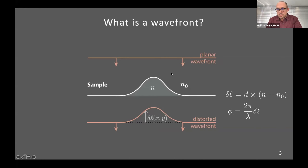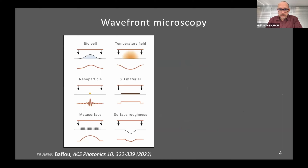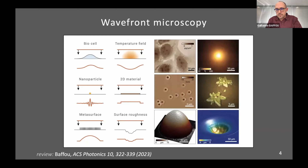The objects we used are many different things: a living cell gives this kind of wavefront distortion, but you can also have a wavefront distortion if you have a microscale temperature gradient, a nanoparticle, a 2D material, a metasurface, or any roughness on a surface. In all these conditions, we can use our wavefront microscopy technique. These are some examples of real experimental images we get — six kinds of samples.